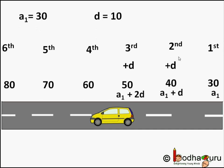The first term has a fixed value — that is 30 rupees in this example. In an arithmetic progression, we add the common difference to the previous term to find the next term. So the first term is 30 rupees, the second term is 30 plus 10 equal to 40 rupees, the third term is 40 plus 10 which is 50 rupees, and the fourth term is 50 plus 10 which is 60 rupees, and so on.